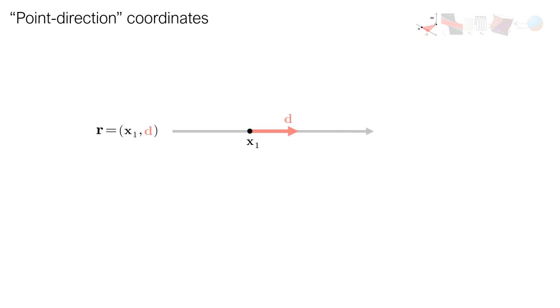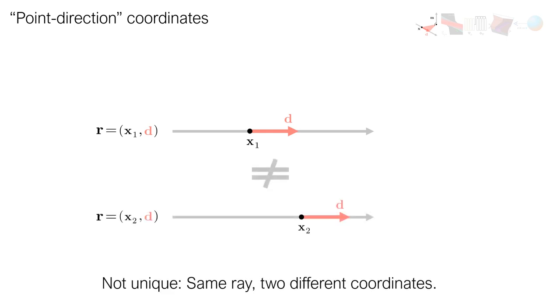Now, to represent a 360-degree lightfield, one might describe a ray in terms of a point on the ray and its direction. Unfortunately, because the point can move along the ray, such coordinates are not unique.